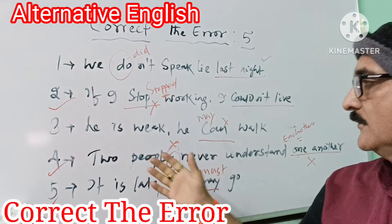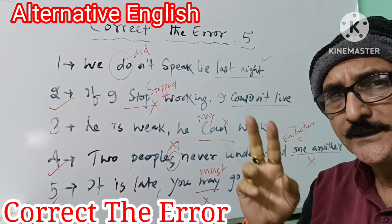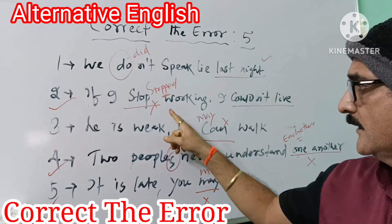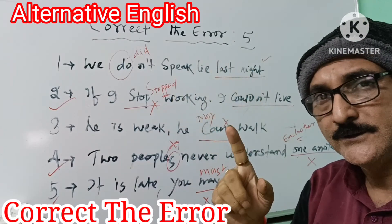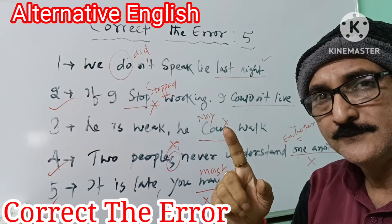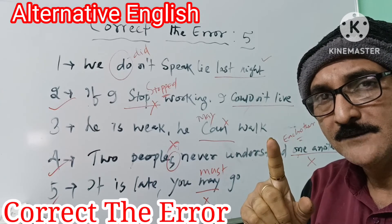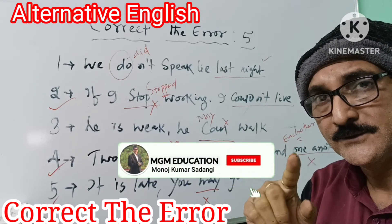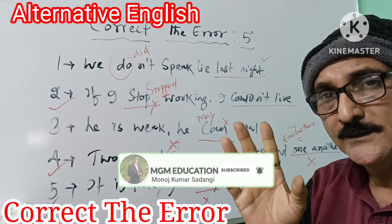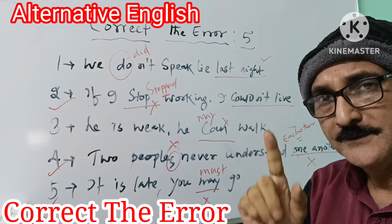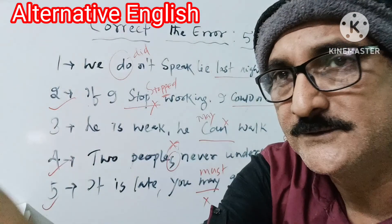So these are the five correct-the-error answers covering tense, modal auxiliary, inversion, and conditional clauses. Also check noun singular/plural, articles, and prepositions. By chance, check those too. Thank you very much for watching.